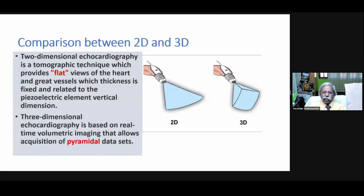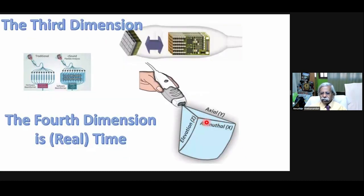Let us have some basics. Two-dimensional echocardiography is a tomographic technique which provides flat views of the heart and great results. The thickness is fixed and related to the piezoelectric element in the vertical dimension. In contrast, 3D is based on real-time volumetric imaging that allows acquisition of a pyramidal dataset with three dimensions: the azimuthal plane, the axial plane, and the elevation plane, which is the z-axis not seen in 2D.